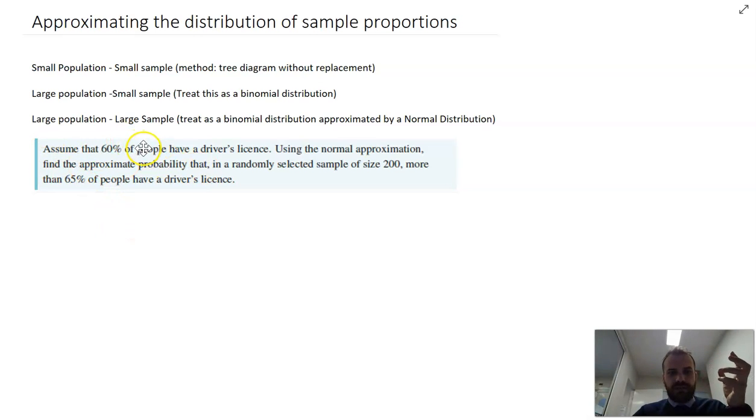Assume that 60% of people, humans across the world, have a driver's license. That's a large population. Using the normal approximation, find the approximate probability that in a randomly selected sample of size 200, that's a large sample, more than 65% of people have a driver's license.